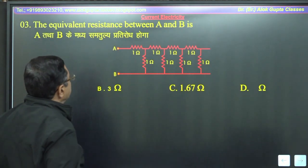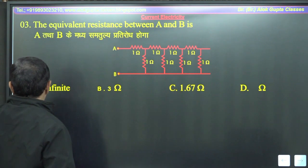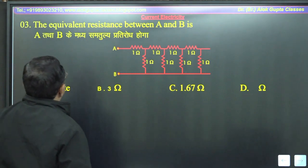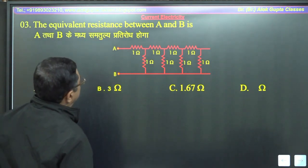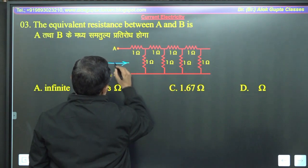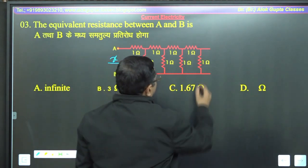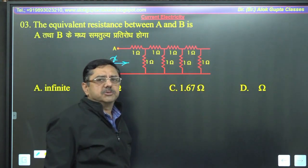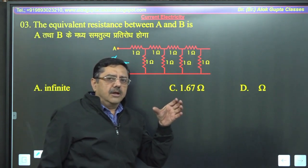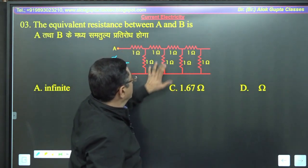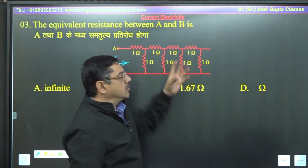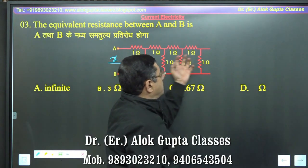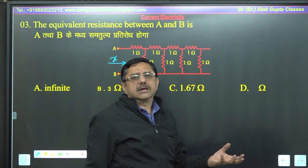The equivalent resistance between A and B is — A और B के बीच में equivalent resistance कितना होगा। इन्होंने यहां open छोड़ दिया है। Infinity resistance अगर आपको कुछ समझ में नहीं आ रहा, तो आप पहले तीन loops ले लें — एक 1, 2 और 3 — इनको solve कर लीजिए। एक rough idea लग जाता है कि कितना resistance होगा — ज्यादा से ज्यादा पाँच loops में 90% of the original result के करीब पहुंच जाओगे।